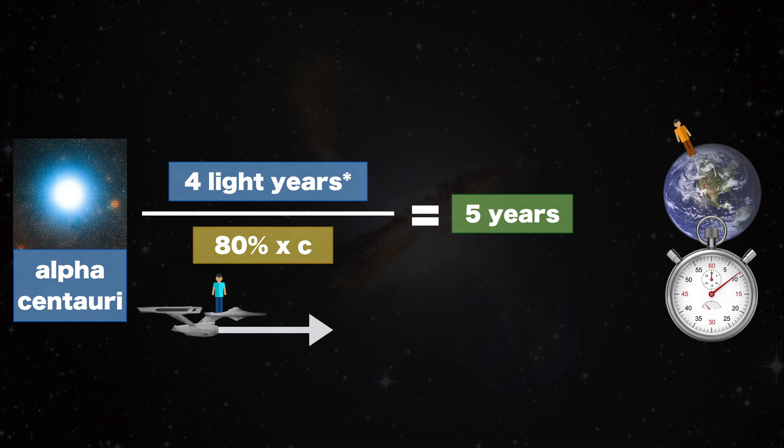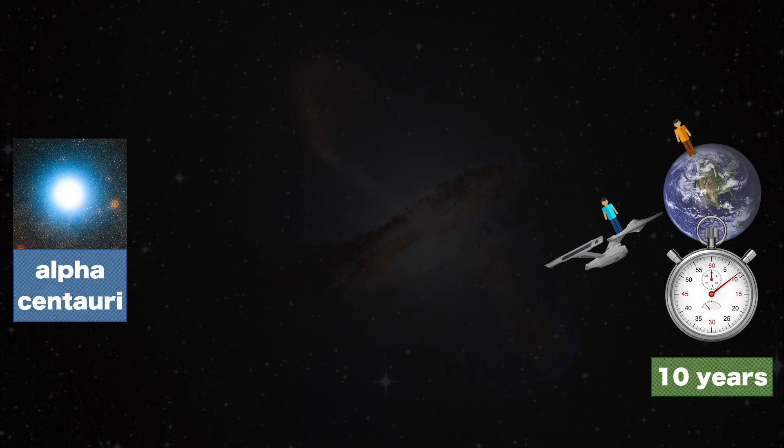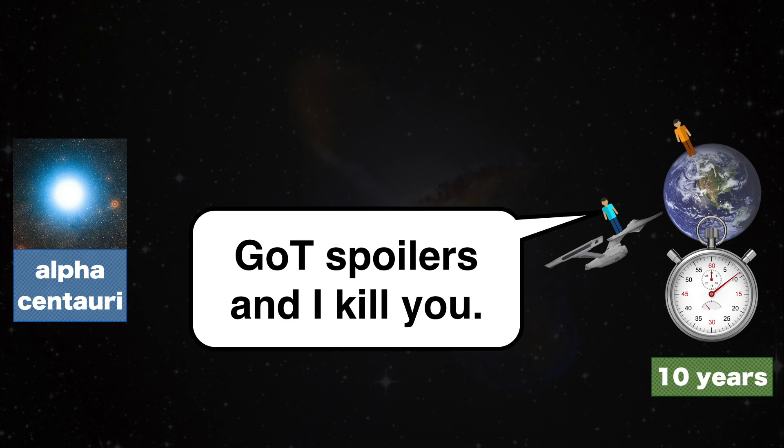Space Twin will take five years each way. Thus, in total, Earth Twin will have measured ten years of time on his clock when his brother returns.